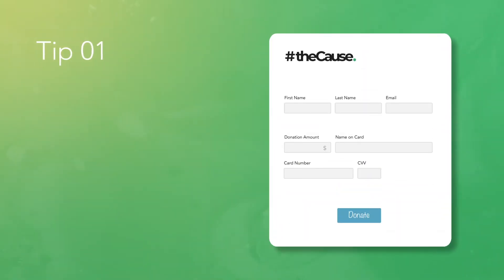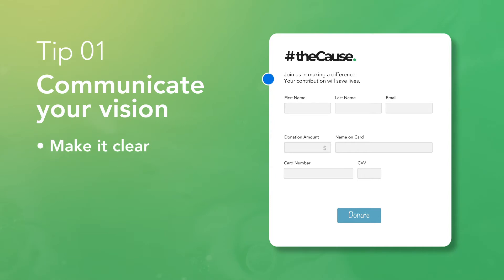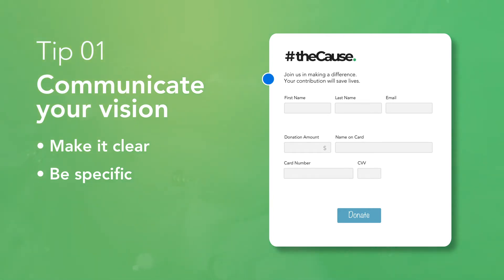First, make sure to communicate your vision on your web forms or landing pages. This is the informational or romance text surrounding your donation form that explains what the donor is giving to. You want to make it clear to donors exactly how their donation will help — be as specific as needed. You want to bring your donors on board with your mission, so you should at least add a quick description of your cause. This helps donors feel like they're an active player in making a difference.